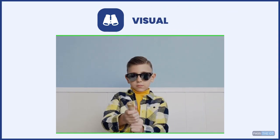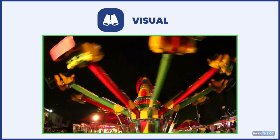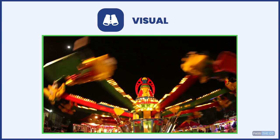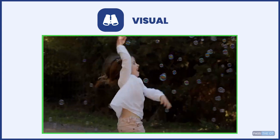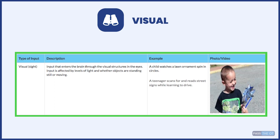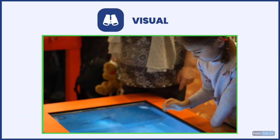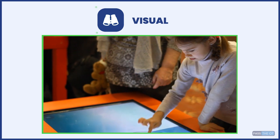In regards to vision, a lot of times kids like things that are really visually stimulating, like fireworks, pinwheels, scanning things, and things that have lights. In this photo, this child is really stimulated by a spinning pinwheel. The brain receives visual stimuli through the eyes, and input is affected by levels of light and whether objects are standing still or moving.